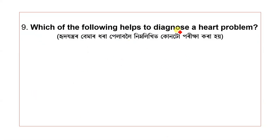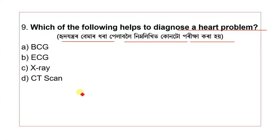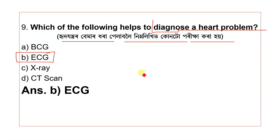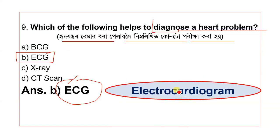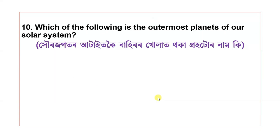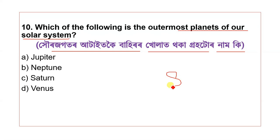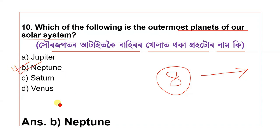Question 9: Which of the following helps to diagnose a heart problem? Question 10: Which of the following is the outermost planet of our solar system? The options are Jupiter, Neptune, Saturn, and Venus. The correct answer is Neptune.